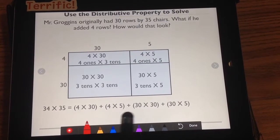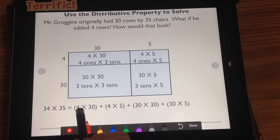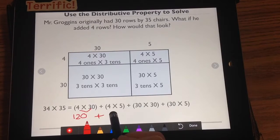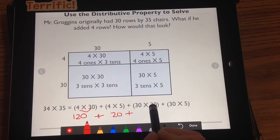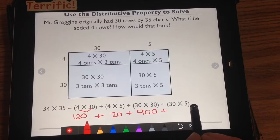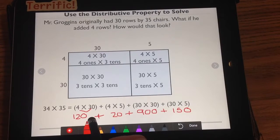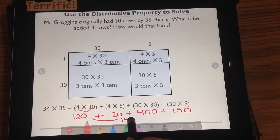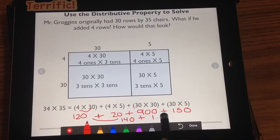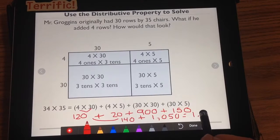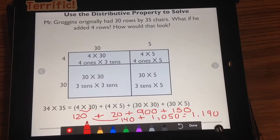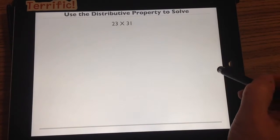If I were to solve each of these, 4 ones times 3 tens is 12 tens. 4 times 5 is 20. 3 tens times 3 tens is 9 hundreds. And 3 tens times 5 is 15 tens. If I added all those together, I would get 140 plus 1,050, which equals 1,190. Now, there is another way to do this, and it's called partial products.